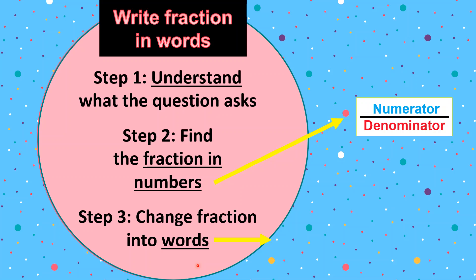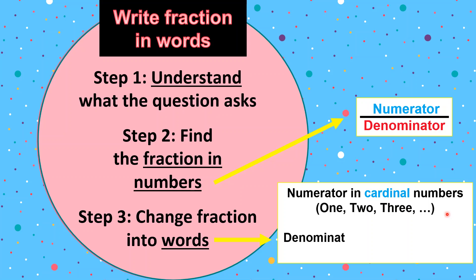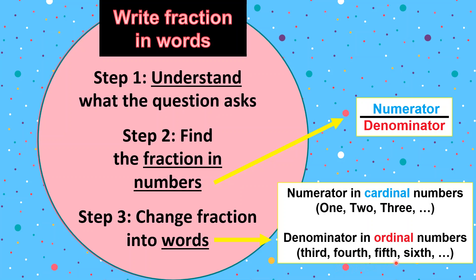The last step: for the numerator, you write it in cardinal numbers — cardinal numbers are like one, two, three, and so on. For the denominator, however, you write it in ordinal numbers, like position numbers — third, fourth, fifth, sixth, and so on.